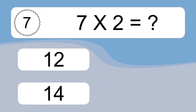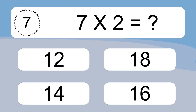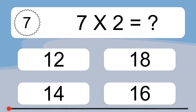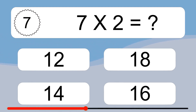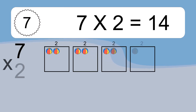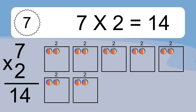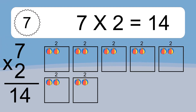7 times 2 equals what? We have 7 boxes, and each box has 2 colorful balls inside. If you count all the balls in all the boxes together, you will have 7 times 2 balls. This equals 14 balls.